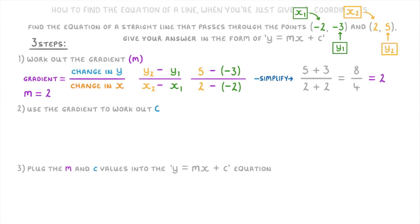Now that we found m, the second step is to use that gradient to work out c. To do that we take our gradient and one of our coordinates from the question and plug them into the y = mx + c equation. It's up to you which of the coordinates you pick, but here it's easier to go for the (2, 5) coordinate because both of these numbers are positive.